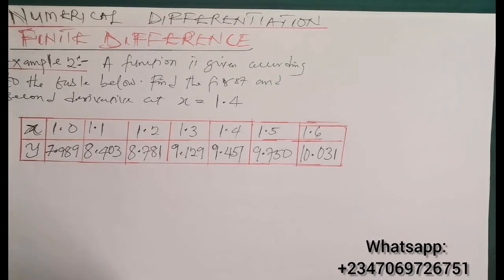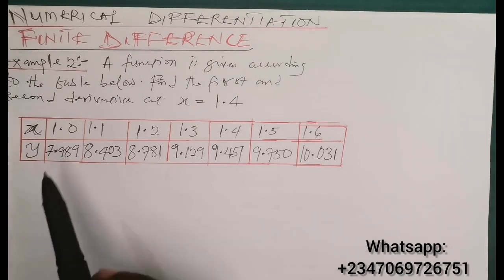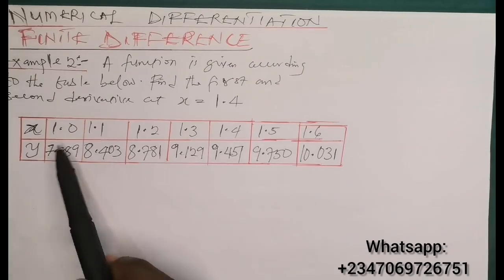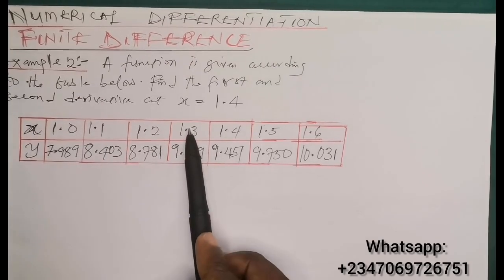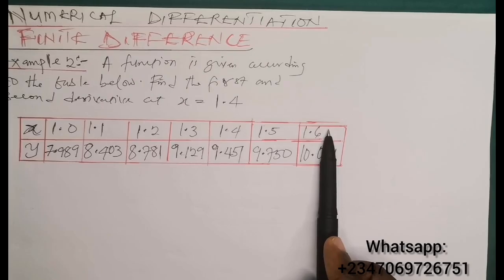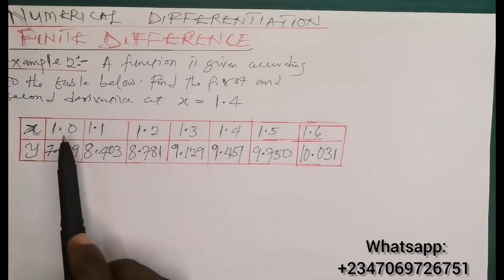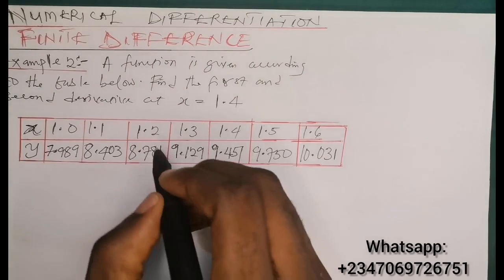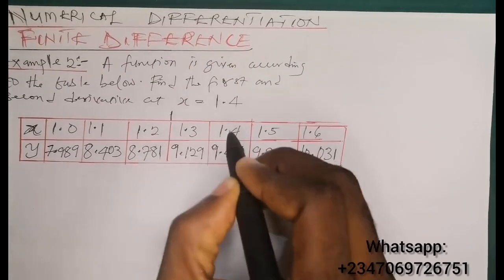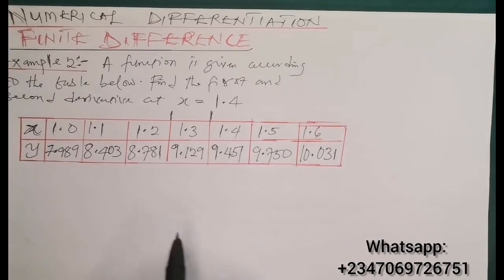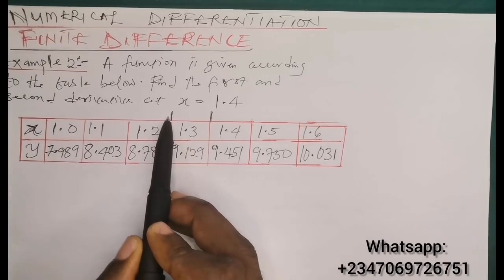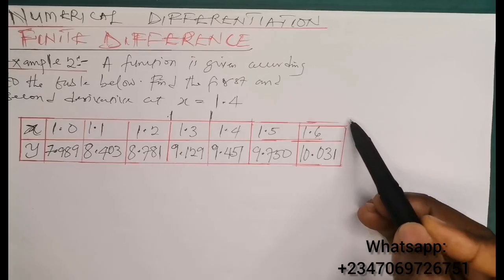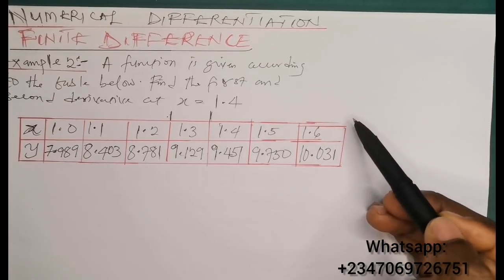The main point of interest is x equals 1.4, so we need to ascertain where 1.4 lies on the table — whether it lies on the forward or the backward portion. The table contains seven values excluding X and Y, so the center of the table is the fourth value. The table of values from the beginning to the center is called the forward table, and from the center to the end is called the backward table.